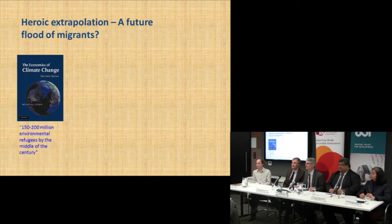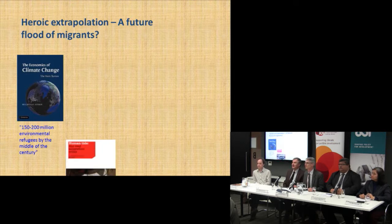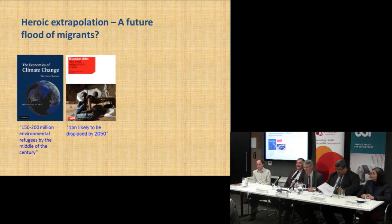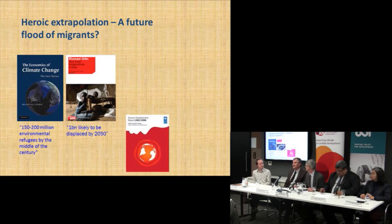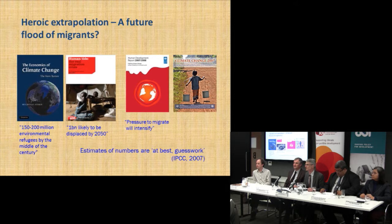To give you some examples: the Stern Report estimated 150 to 200 million environmental refugees — refugees is the wrong word, but let's give them the benefit of the doubt. Another report was quoted as saying a billion people are likely to be displaced by 2050. The UN report then muted this down, saying there was a pressure to migrate. And the IPCC then beautifully hedged its bets by saying estimates of numbers are best guesswork.